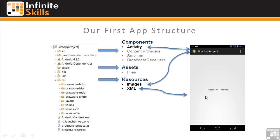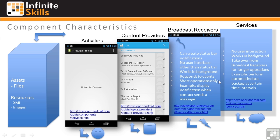Let's look back at our first app. It had one component, a main activity, that used image and XML resources to display a single screen. It didn't contain content providers, services, or broadcast receivers. Let's say we wanted to include other component types — let's look at these components in more detail.